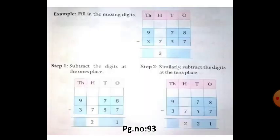Next, another example. Step 1, subtract the digits at the one's place. So the one's place number is 8 minus 7. So 8 minus 7 is 1.